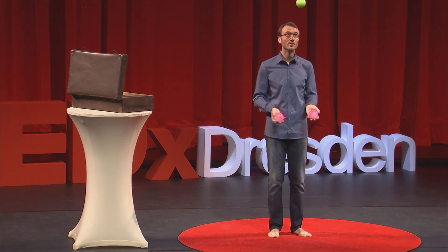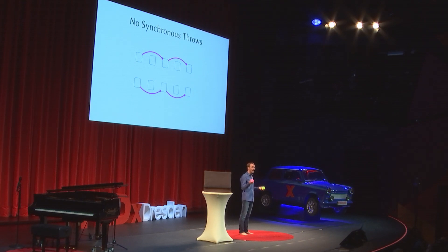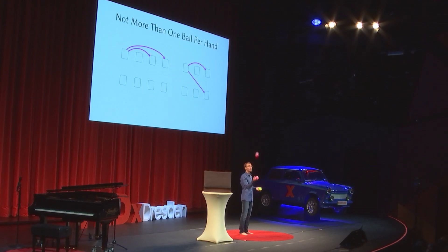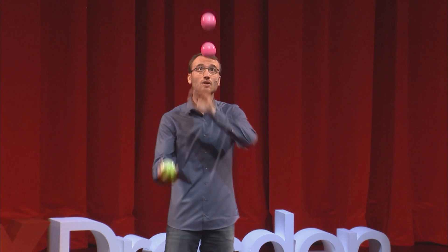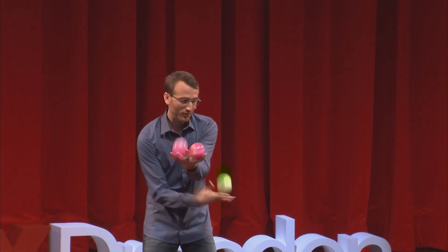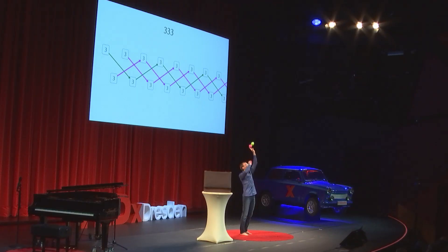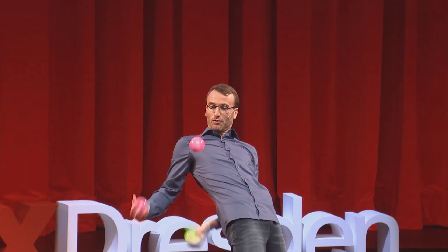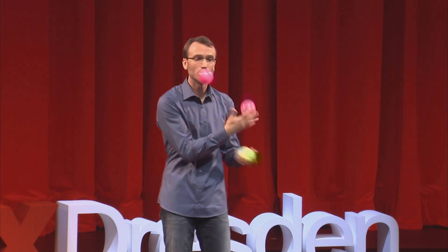A siteswap stands for a whole class of juggling tricks, because this notation ignores any specific body movement or hand position. So the basic three-ball cascade is three, three, three. But also this is three, three, three. Or for the skinny jugglers, this is three, three, three. And this. And even this — this is three, three, three, because I did not change the rhythm at which I catch and throw the balls.